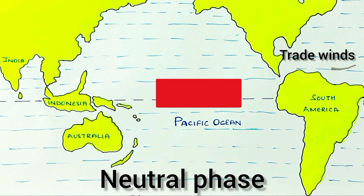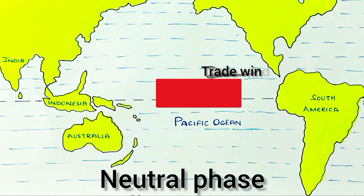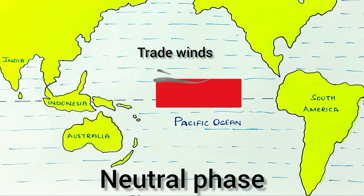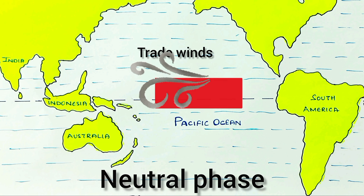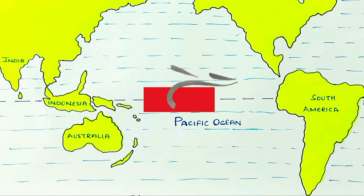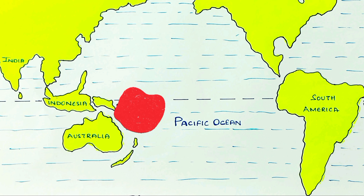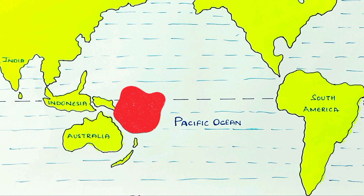The trade winds, which are also known as tropical easterlies, originate from the tropical east and slowly blow from the eastern side towards the western side in the tropical region. These trade winds push the warm ocean currents towards the Asian side — towards Indo-Australian and Indonesian countries — from east to west. Thus the western Pacific Ocean gets warmed and low pressure is created here.